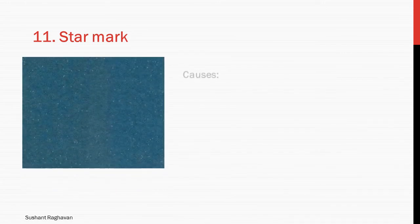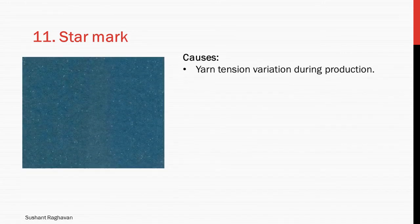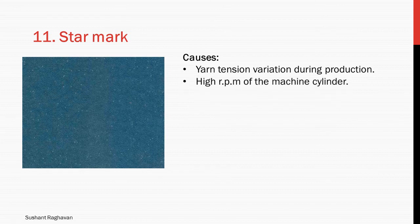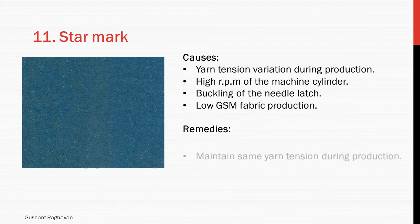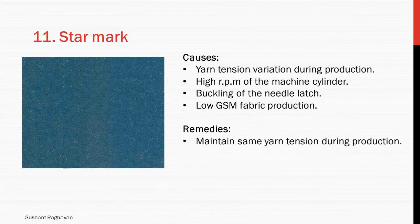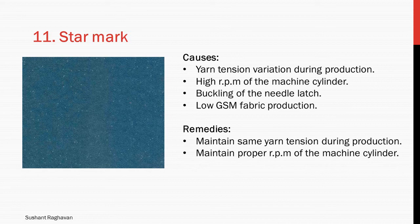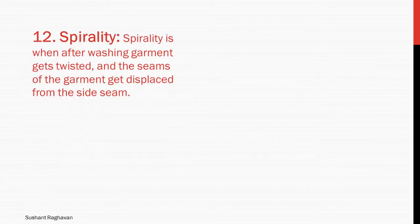Star mark. Causes: yarn tension variation during production, high RPM of the machine cylinder, buckling of the needle latch, and low GSM fabric production. Remedies: maintain the same yarn tension during production. Maintain proper RPM of the machine cylinder — range should be up to 23.